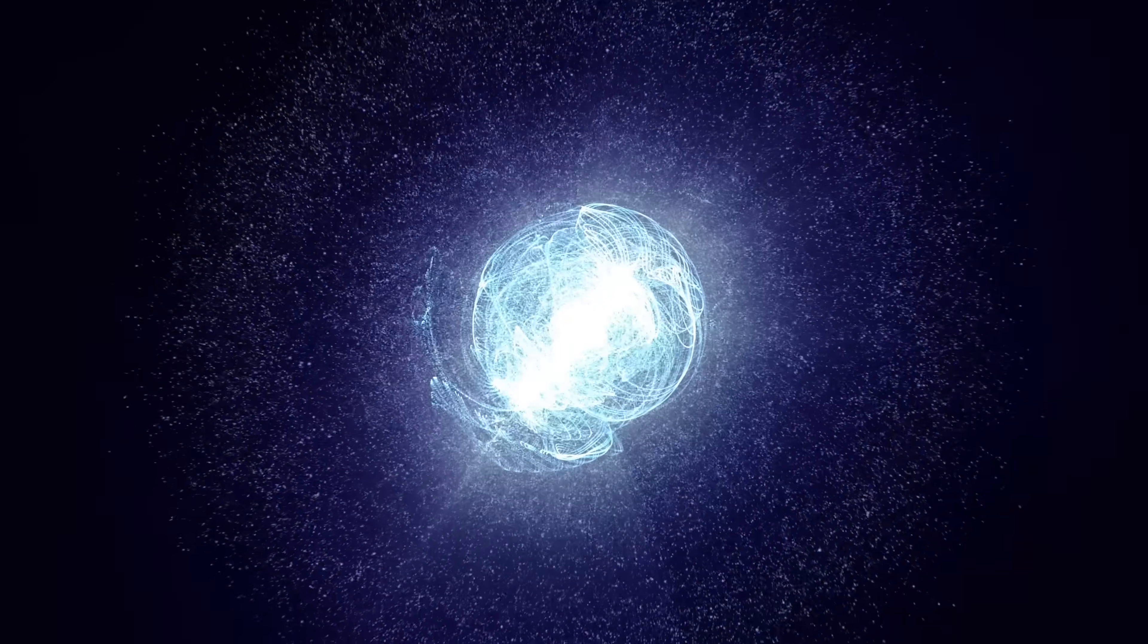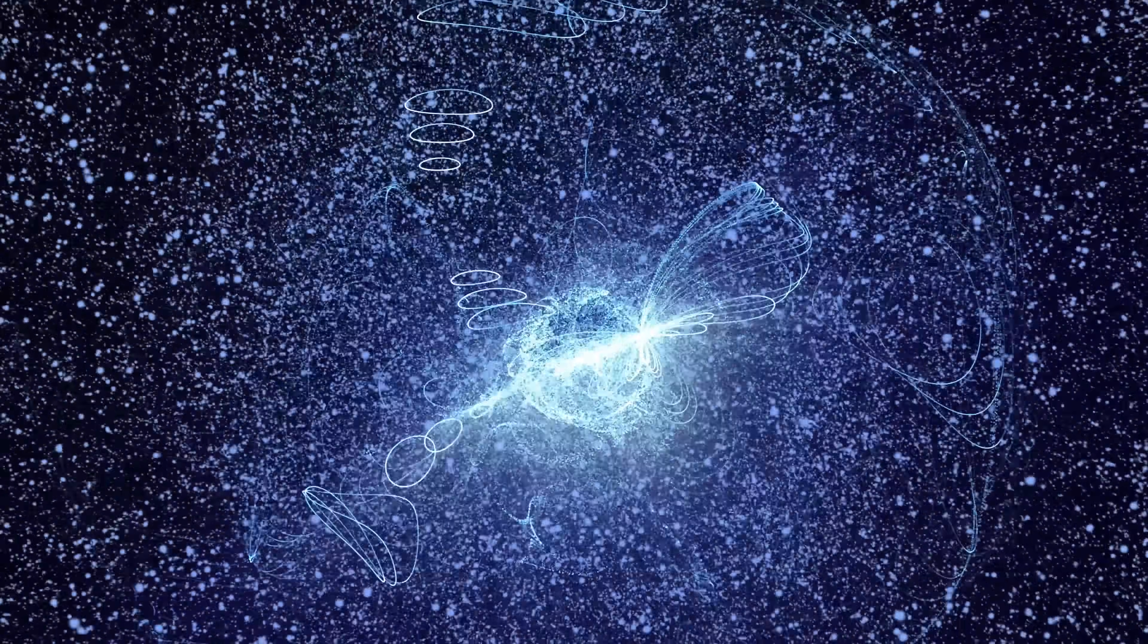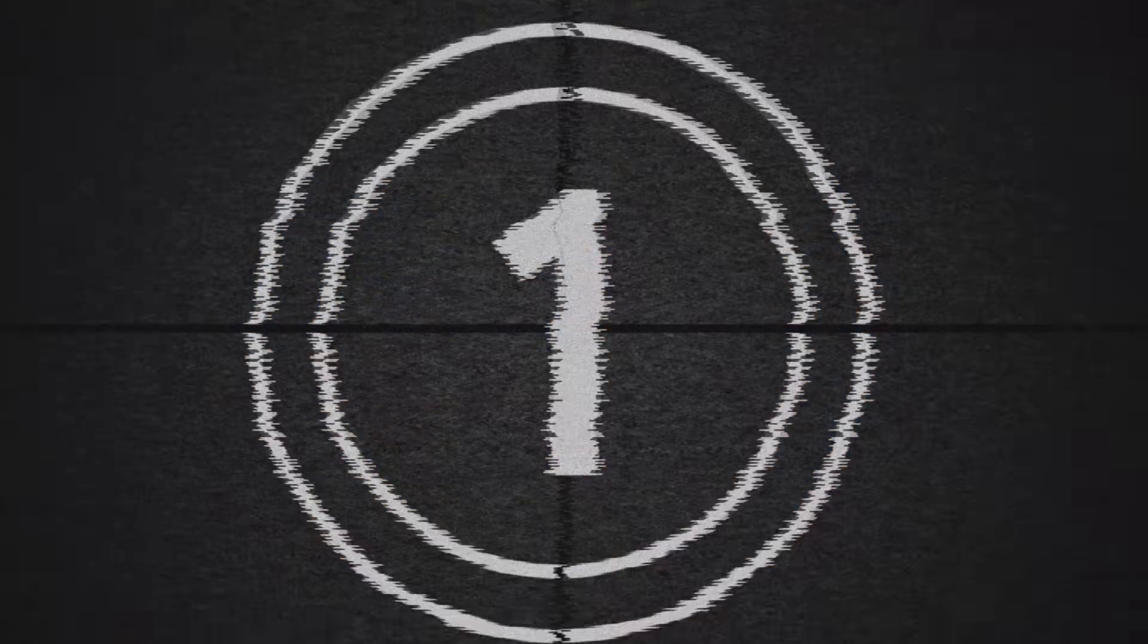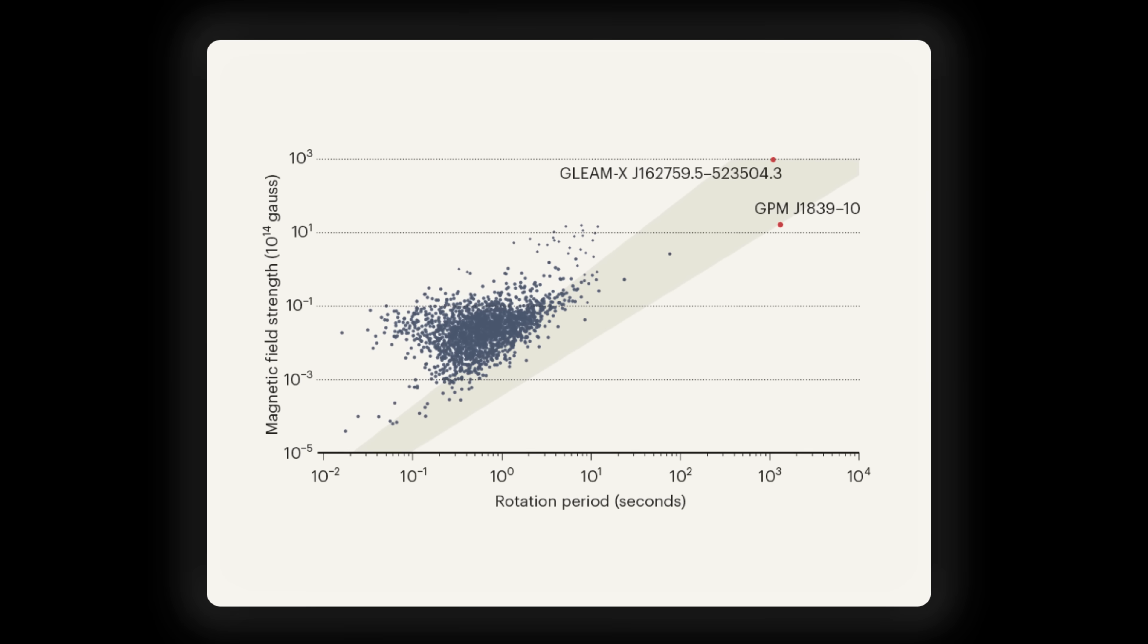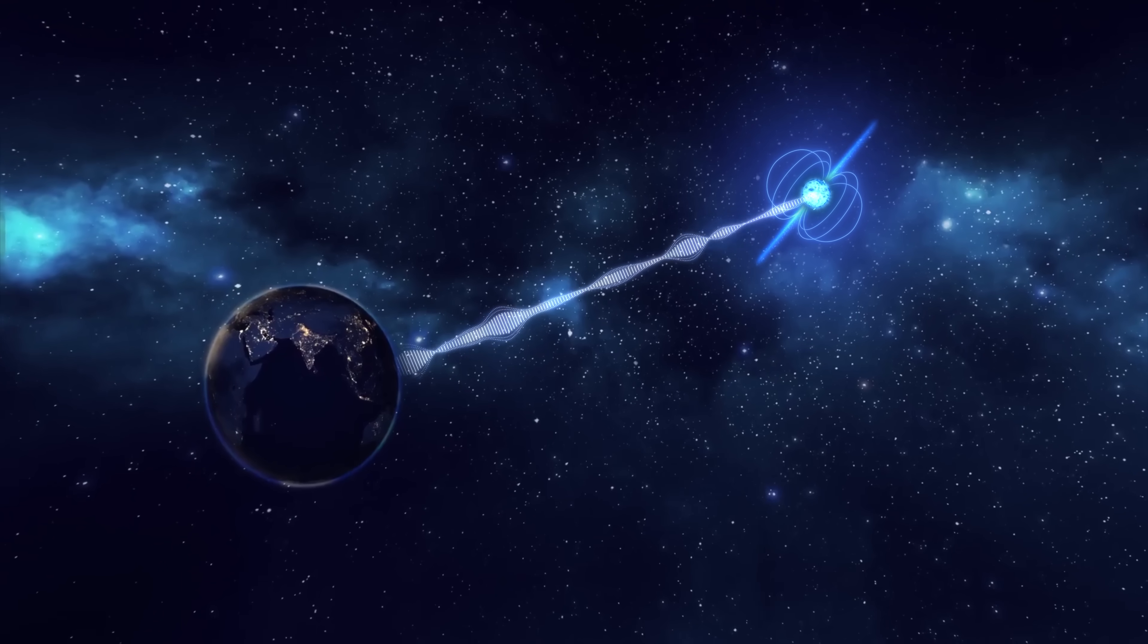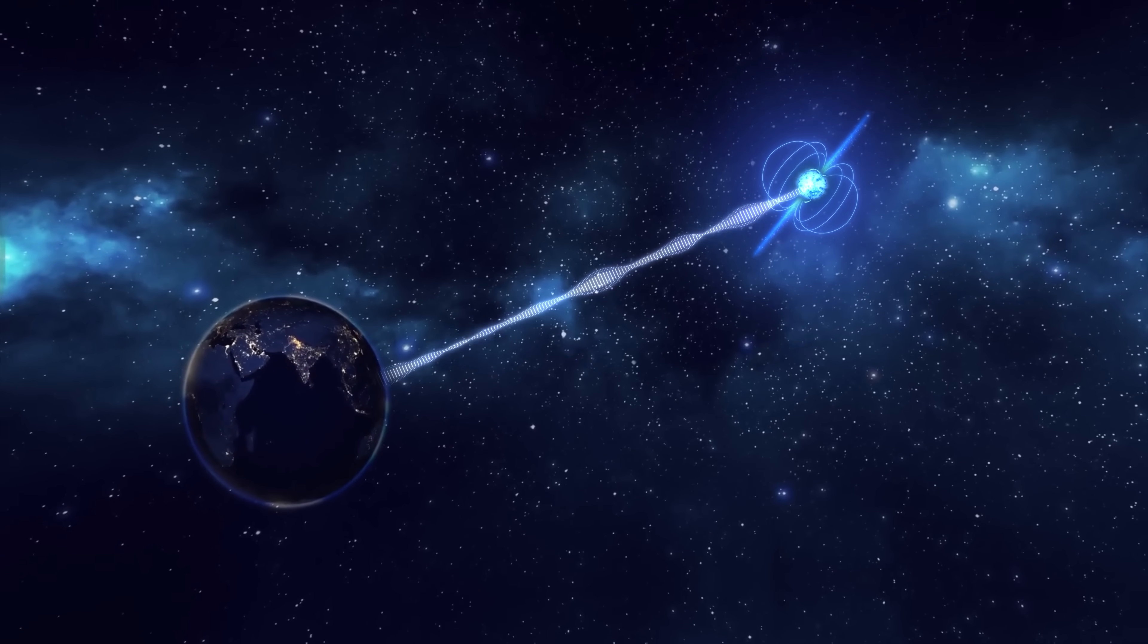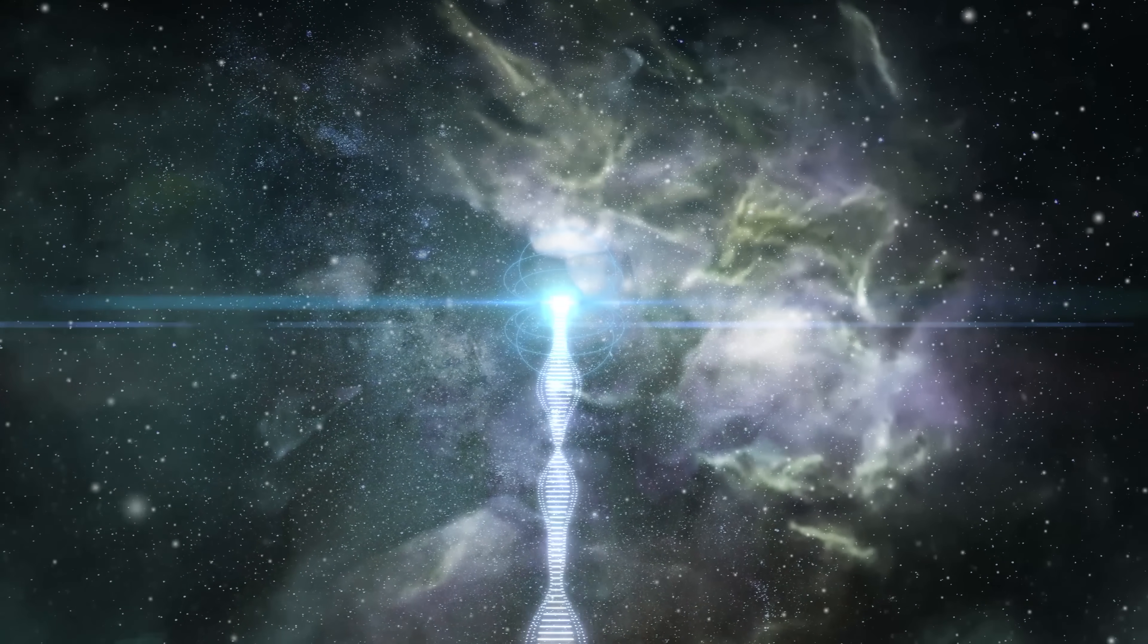So, could a magnetar be the source of our mysterious GPM J1839-10 signal? At first glance, it might seem plausible. After all, magnetars are known for their strange behavior. However, the concept of starburst fails to explain the constant 22-minute signal interval and its longevity.